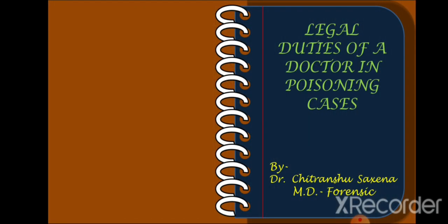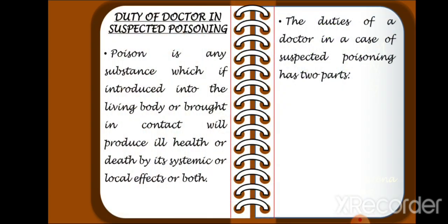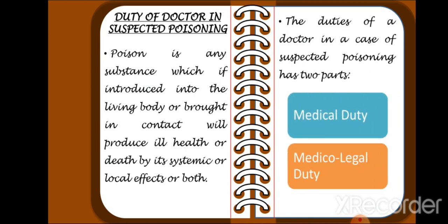This is a video on legal duties of doctors in poisoning cases. A poison is any substance which, if introduced into a living body or brought in contact with it, will produce ill health or death by systemic or local effect or both. The duties of a doctor in cases of suspected poisoning have two parts: medical legal duties and medical duties.